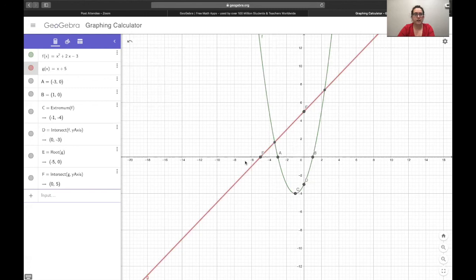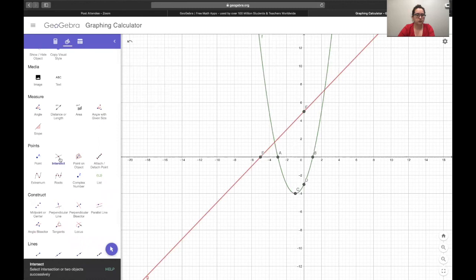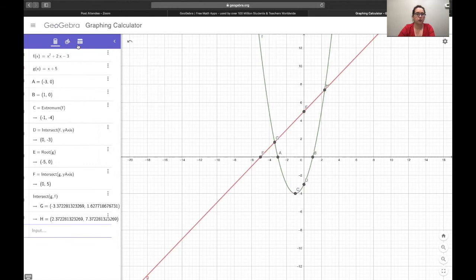So we can also go here and say okay we want to know where these two intersect so we have the line and we have the parabola and that gives us g and h which going back to our calculator tab over here tells us they intersect at negative three point three seven and one point six three and that's point g and then point h is two point three seven and seven point three seven so that's h right there.